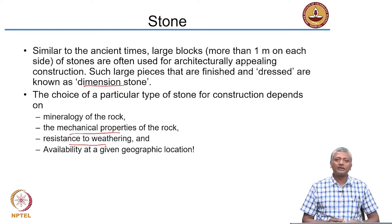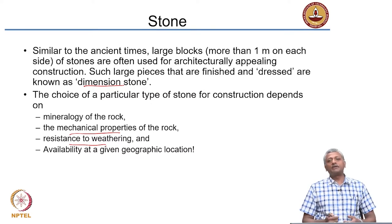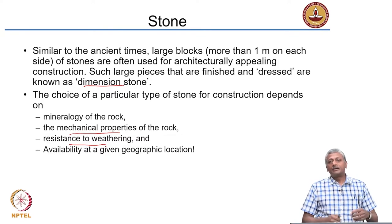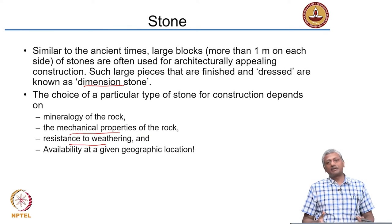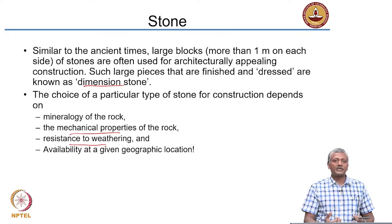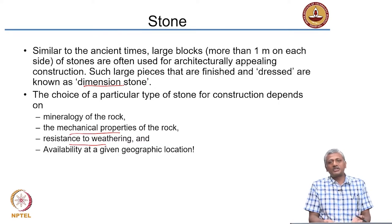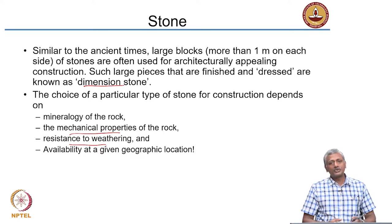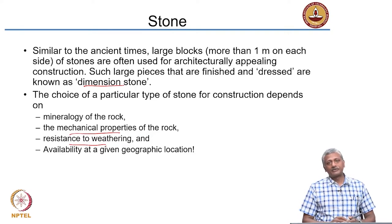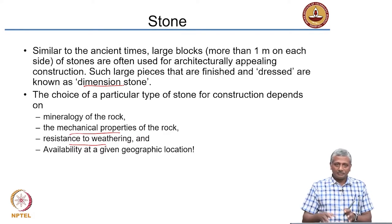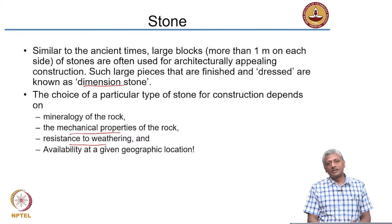Today, economic considerations require us to use more locally available materials. If you look at sustainability, it is always more sustainable to use what is locally available rather than source material from outside, because locally available materials are attuned to the specific environment of a particular area. Materials brought from outside may not survive to the same extent — the same is true with vegetation. One needs to be careful in choosing materials for construction. Locally available materials are always the best for constructing in a particular region.